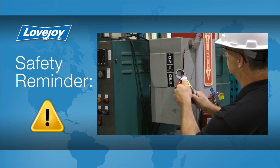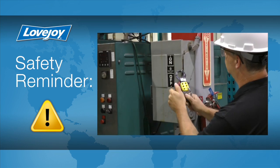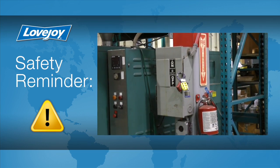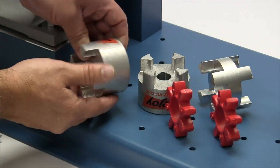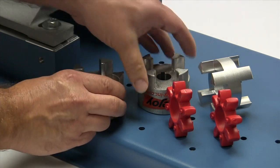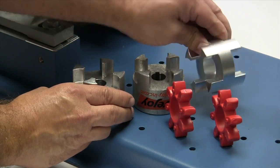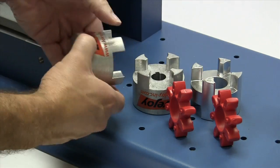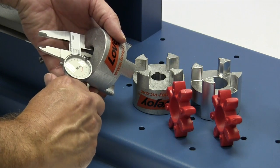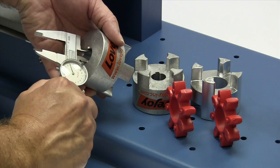Even though we have disconnected the power to this system, it is always a good idea to check and ensure that the power is off. When you receive the coupling, you should inspect each component to ensure that there are no visible defects, cracks, or damage from shipping. You may want to check the bore size for accuracy prior to continuing with the installation.